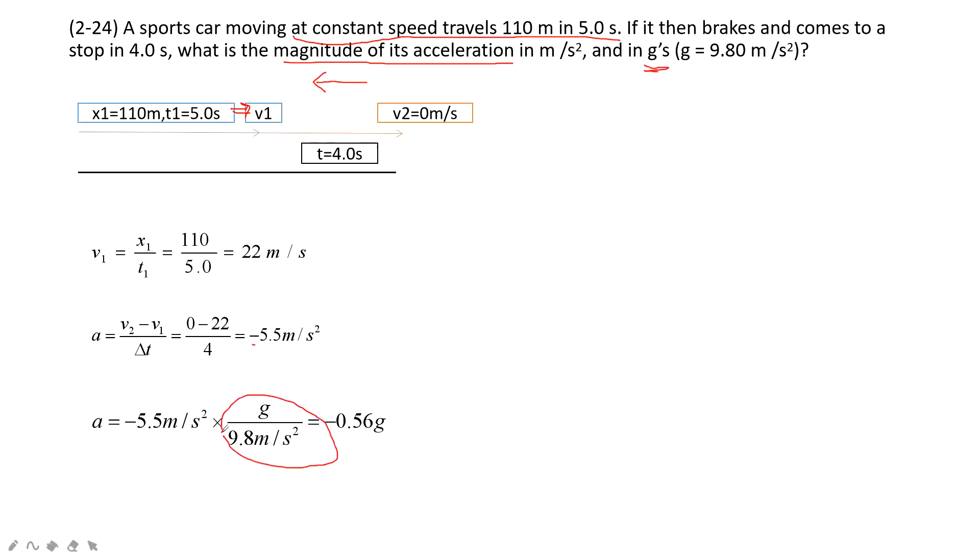this one equals to 1, right? Because g is 9.8 meters per second squared. So this one is 1. Then we can use this one divided by this one times g. So we get it is negative 0.56 g.